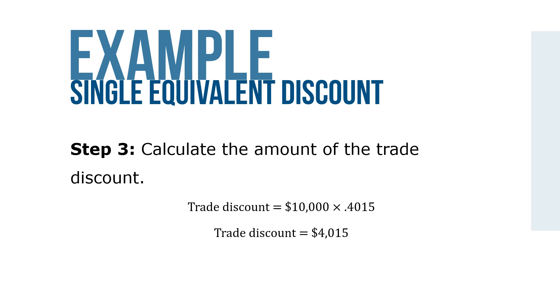Step 3: Calculate the amount of the trade discount. Trade discount equals $10,000 times 0.4015 for a trade discount of $4,015.